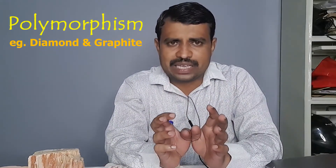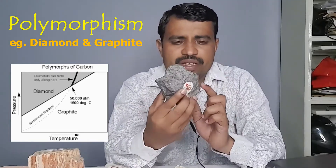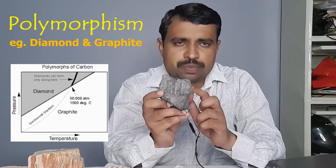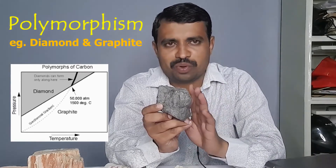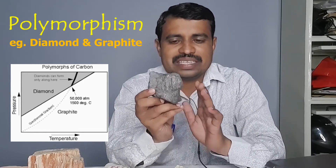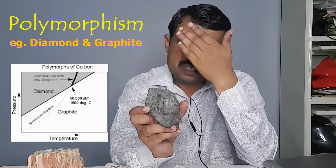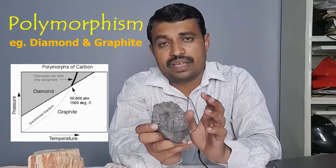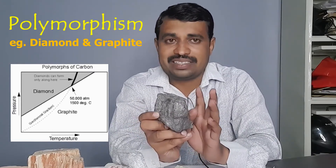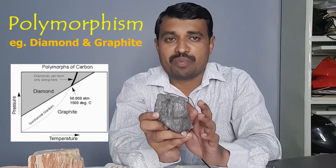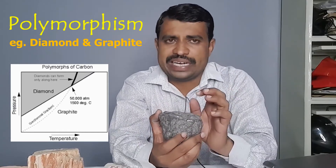The best example of a polymorphic series is carbon. We are familiar with diamond and graphite. Graphite is the mineral present in a pencil with very low hardness, whereas diamond is the hardest mineral. On the Mohs hardness scale, diamond has the highest hardness of 10. Diamond and graphite have the same chemical composition but different structures and different prices. Graphite has a hexagonal crystal system, whereas diamond has a cubic — also called isometric — crystal system.